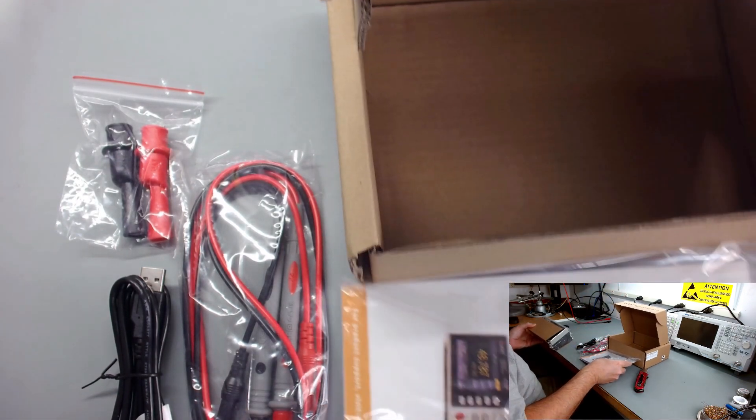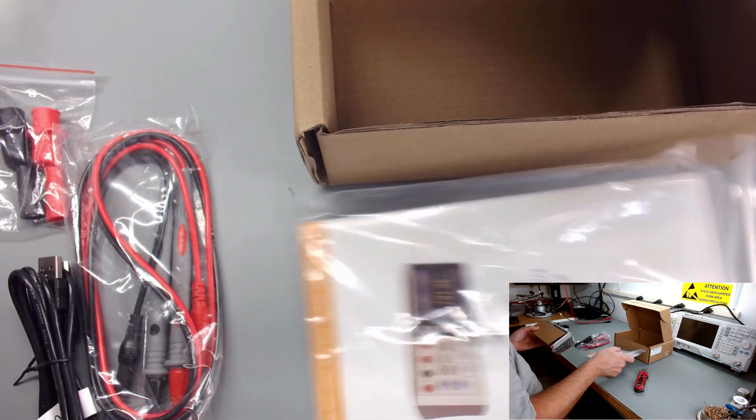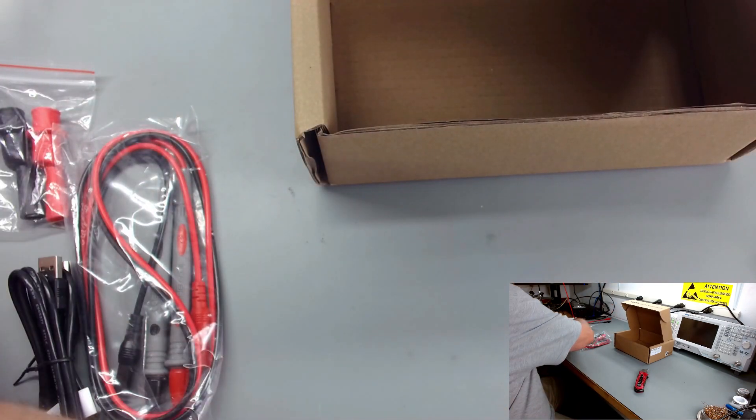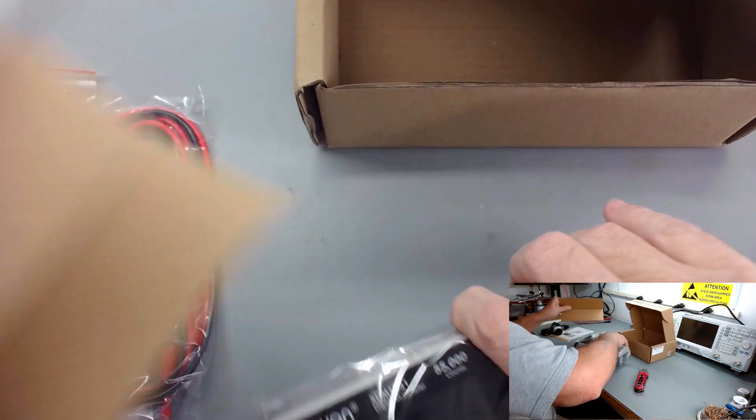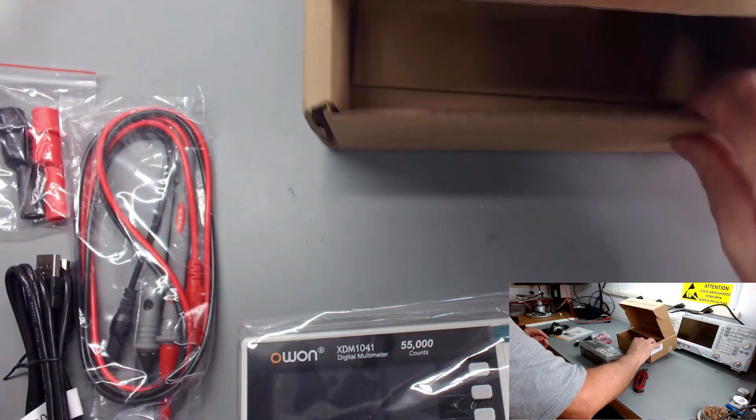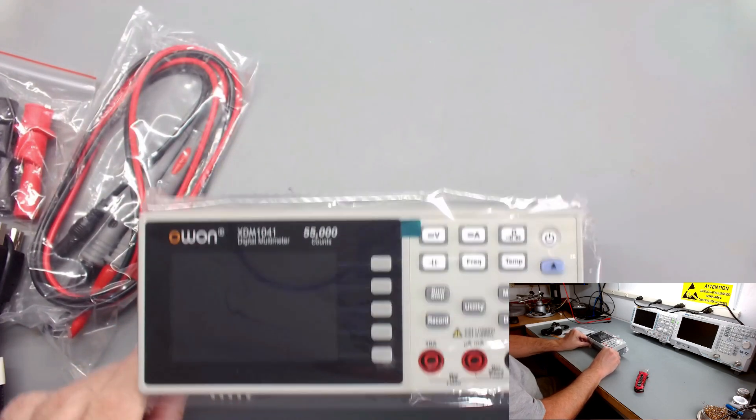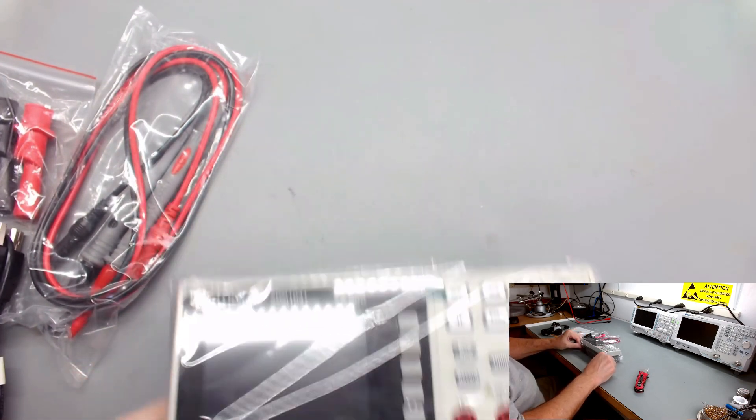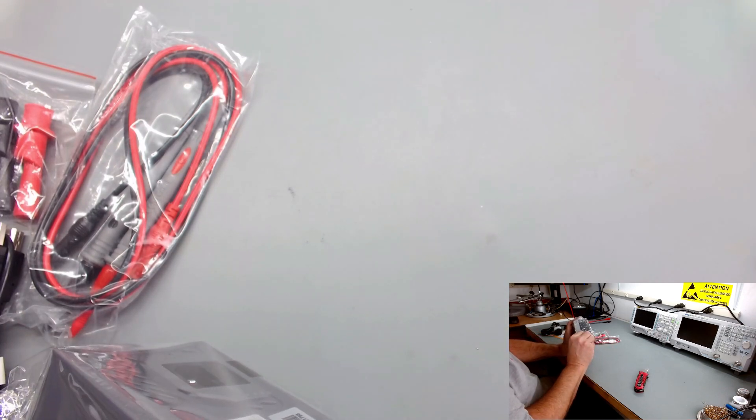As you can see, it comes with the normal stuff you'd expect. USB cable, probes, instruction manual. Can't hook it to the computer with the USB. And as you can see, it's pretty small. But it has pretty good sized digits. That's another thing I was looking for. I want a bright screen with nice big digits and something I didn't need to worry about tearing up.